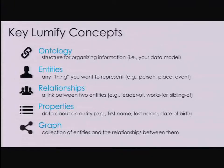Entities are anything that you want to model in your data — essentially the proper nouns: people, places, organizations, events, transactions, those sorts of things. Relationships are links between entities — how are those entities related? Those are the edges on the graph. Relationships are between different types of entities, so a person can be a leader of an organization, one person can be related to another, that sort of thing.